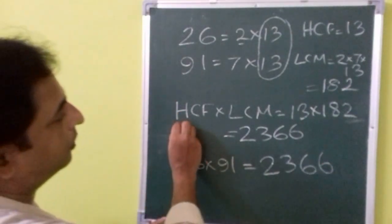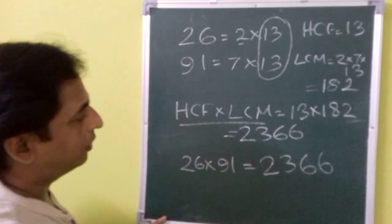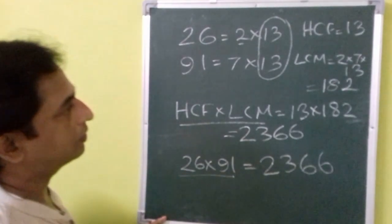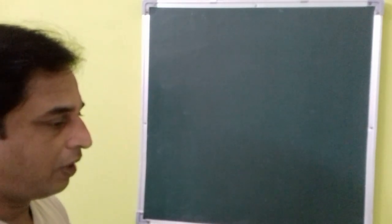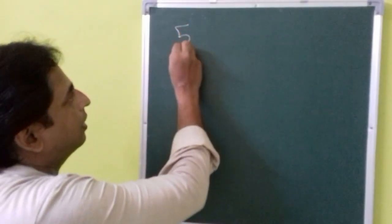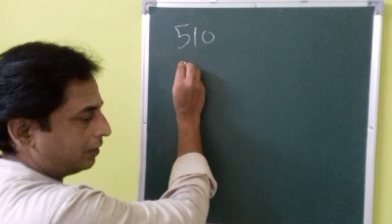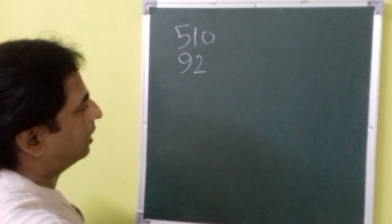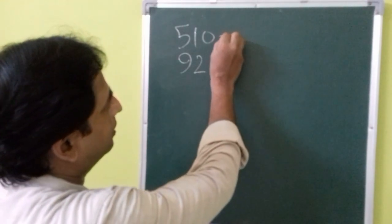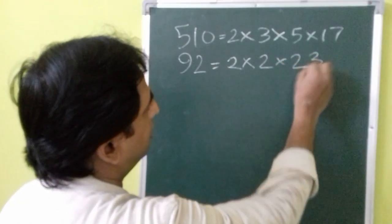That means the product of the HCF and LCM will be equal to the product of the numbers. The next pair of numbers we have is 510 and 92. So again, you can factorize it using the prime factorization.